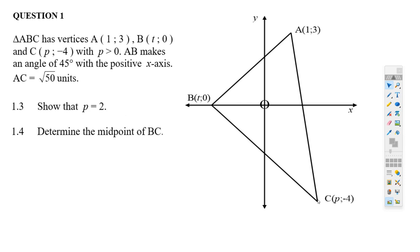Okay, now here: show that p equals 2. Well, we can do that. All we have to do is use... we're given that AC is √50 units. We just have to use the distance formula. We know that AC is √50. So if we square AC, it'll be (3 + 4)² plus (1 - p)².